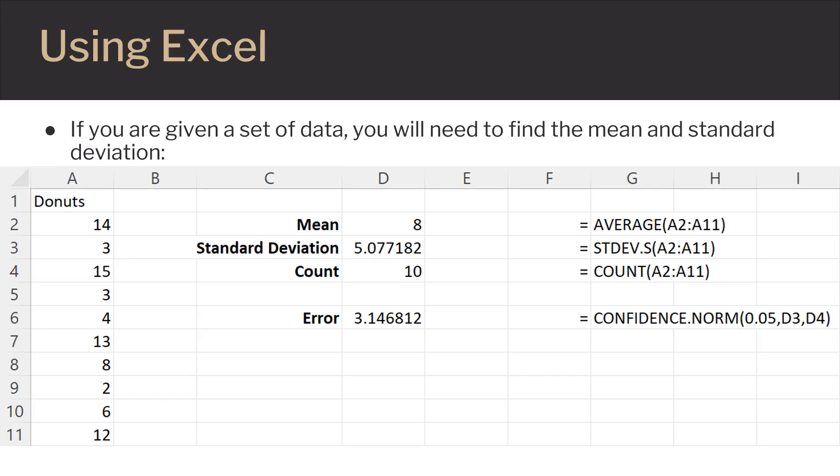If you are given a set of data, you will need to find the mean and standard deviation before you can calculate the Z-Score using Excel. It is helpful if you label in one column what values represent, so that in the column next to it, you can actually enter the Excel commands to make these calculations.